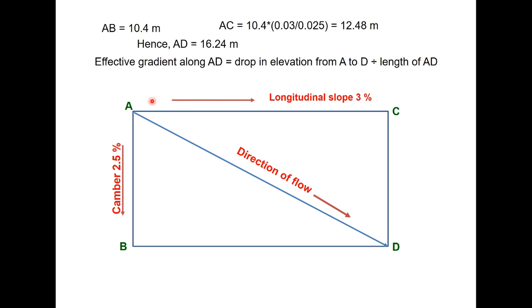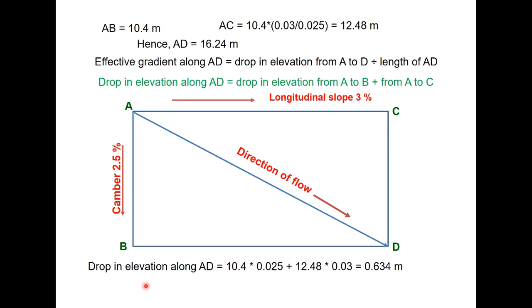Now effective gradient along AD will be drop in elevation from A to D divided by length of AD. And this drop in elevation will be drop in elevation from A to B plus drop in elevation from A to C. So that is drop in elevation along AD will be 10.4 meter at the rate of 2.5 percent plus 12.4 meter at the rate of 3 percent that is 0.634 meter. And therefore the effective gradient along AD will be 0.634 divided by length of AD that is 16.24, 0.039. This is the gradient along the movement of the water.